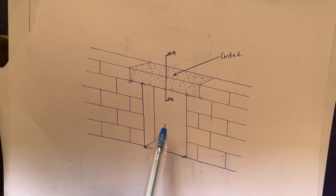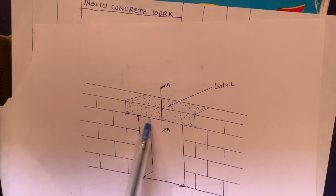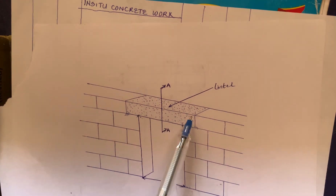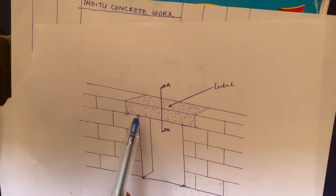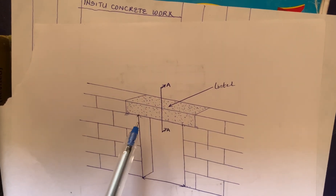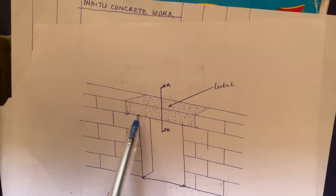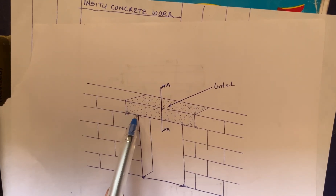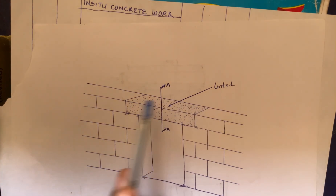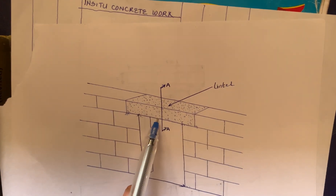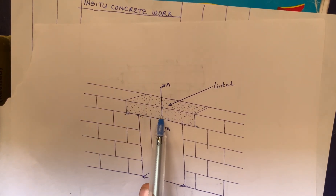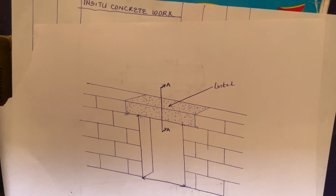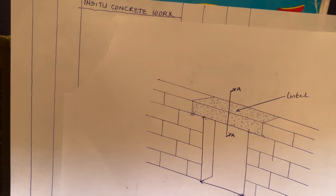If you look at this diagram, you would see that the material used at the lintel is different from the block. Maybe you've heard builders say something like 'when you get to the lintel level' — this is the lintel level. That point where you begin to see concrete covering the top of the door opening or window opening is called your lintel level, and this lintel level is made up of reinforced concrete.